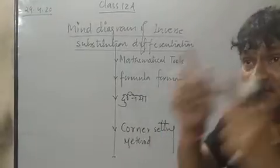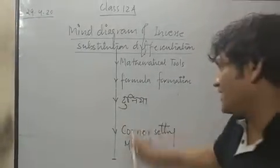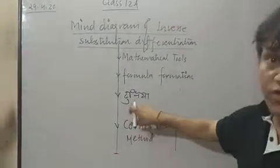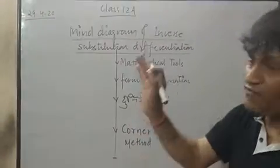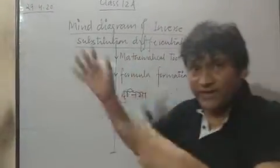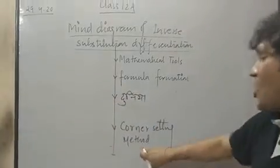Cos inverse is there, then cos can be done. If it is not possible, then the formula is made by you. This is the example I have given you. By any means, one formula is made by pi by two adjusts. Clear? Last step is corner setting method.